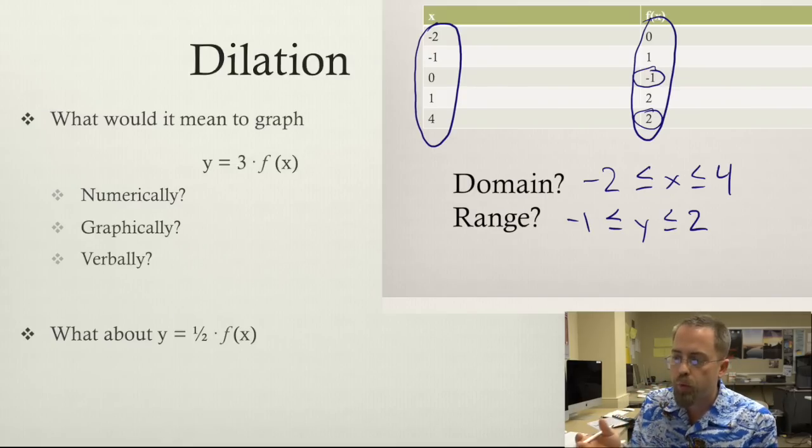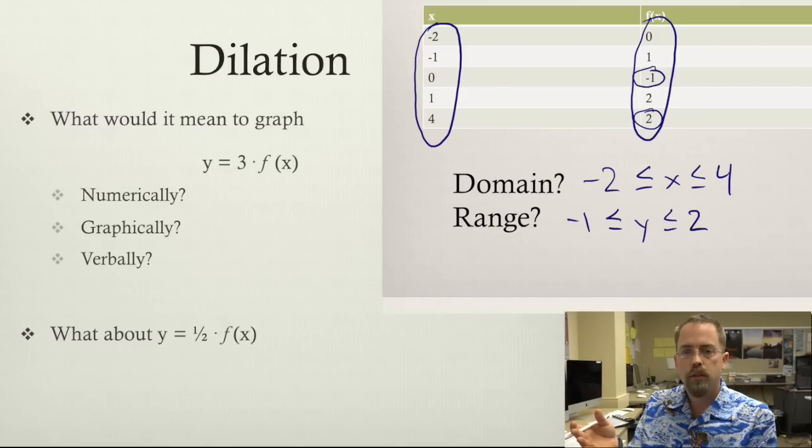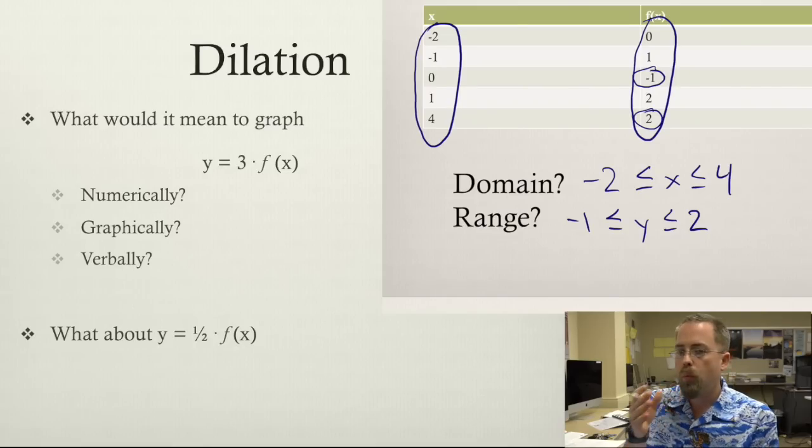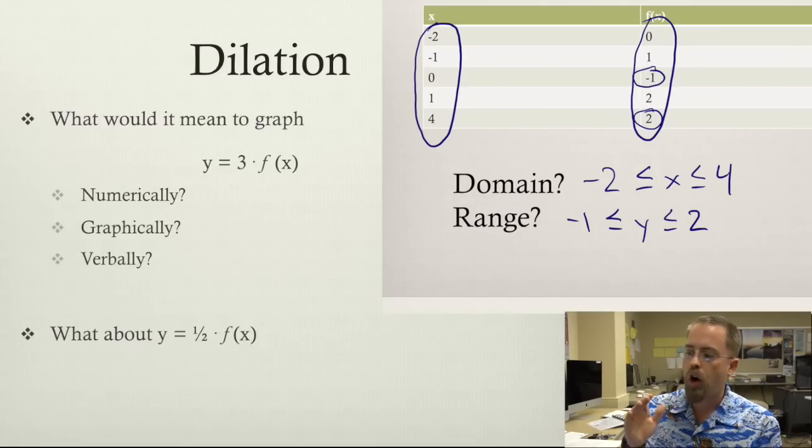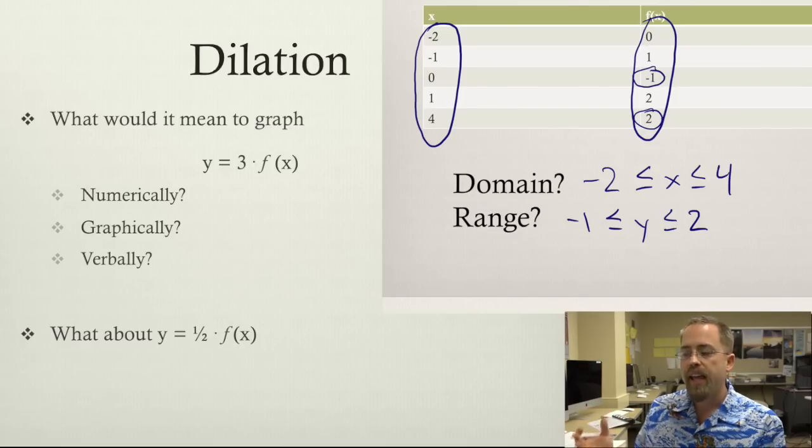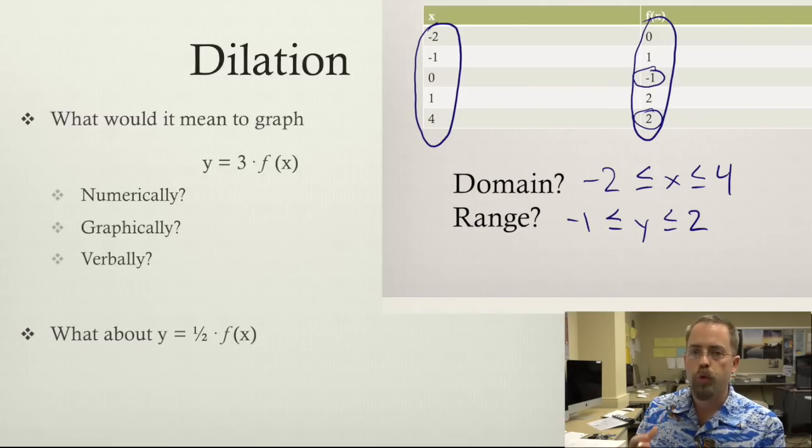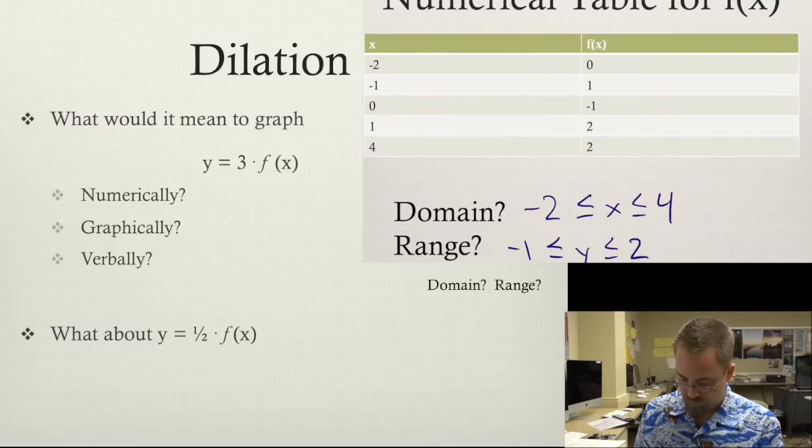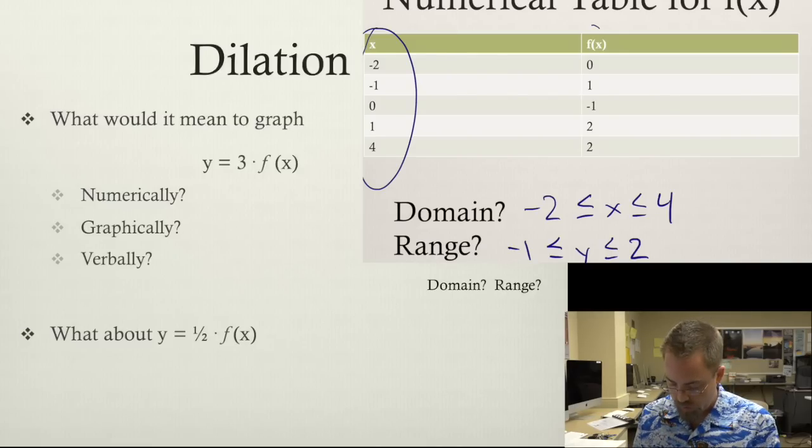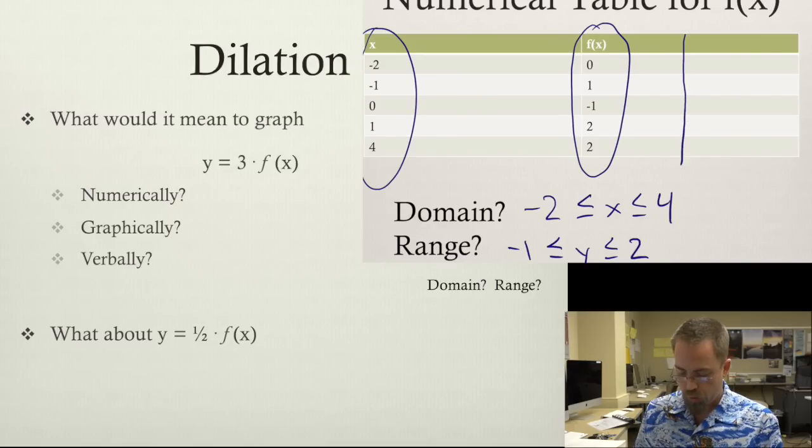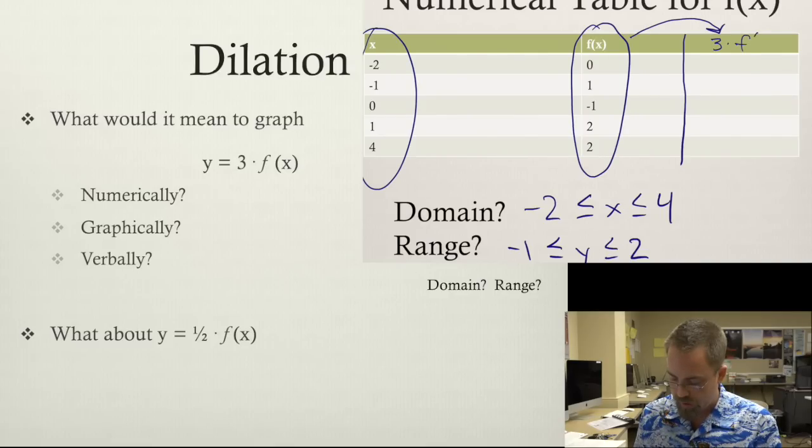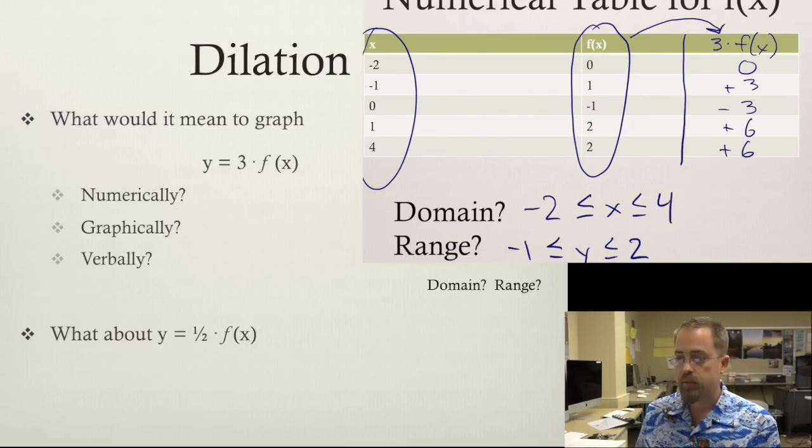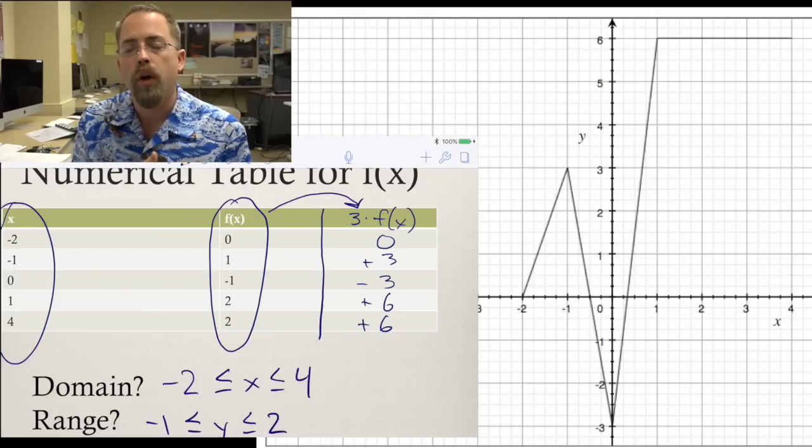Now, what would it mean if we graphed this with a 3 outside the f of x? What are we saying when we write that 3 out there? We're saying on the y's, graph f of x but do it in a particular order. Find f of x and then take all those points and multiply them by 3 after you have found those y values. So if we look at our table here again, we're going to find these given x's, just plug in that independent variable, calculate f of x. But then before we graph it, we're going to take this whole column and multiply every single thing in that column by 3. So 0, positive 3, negative 3, positive 6, positive 6.